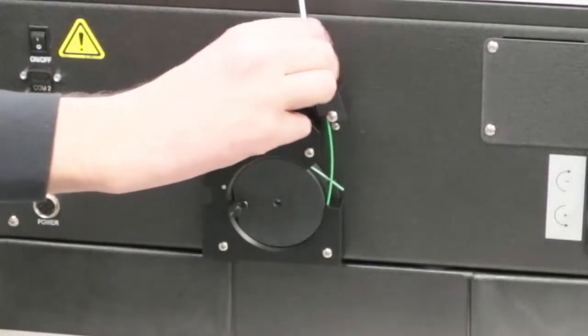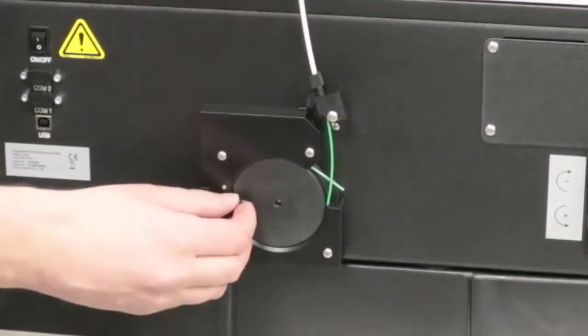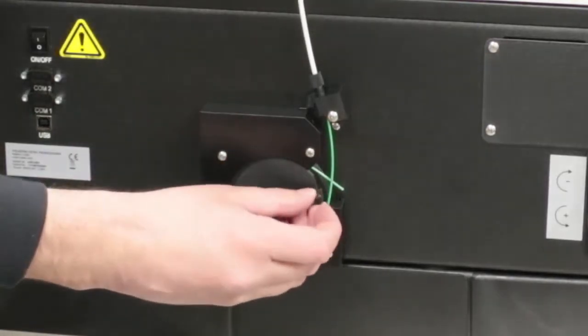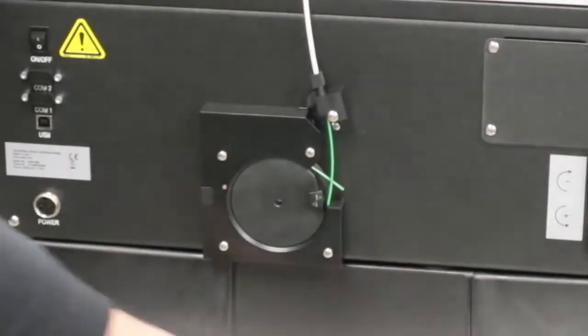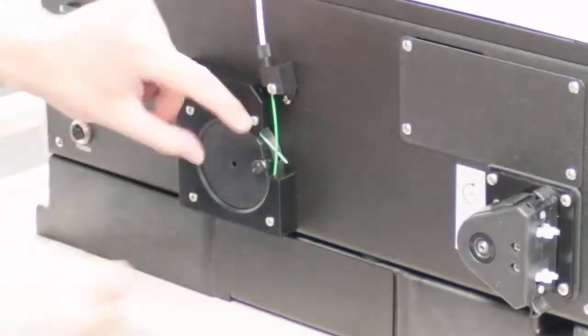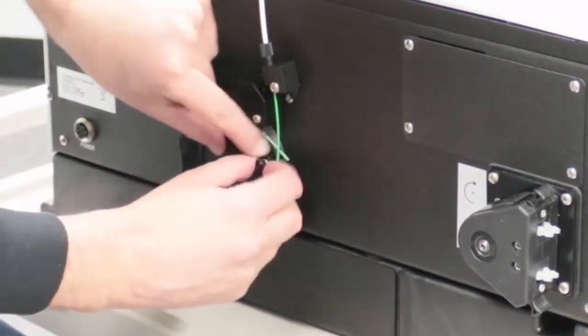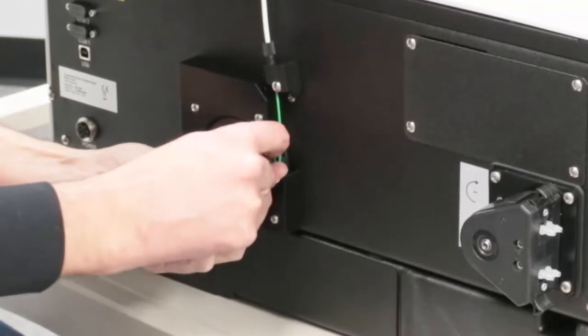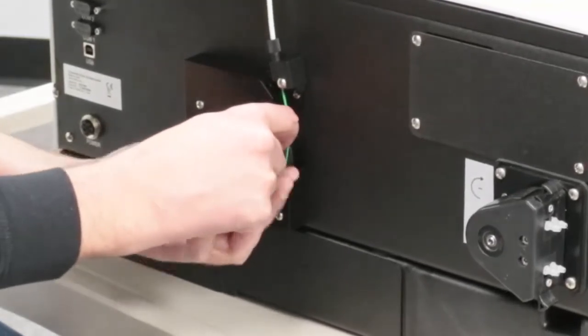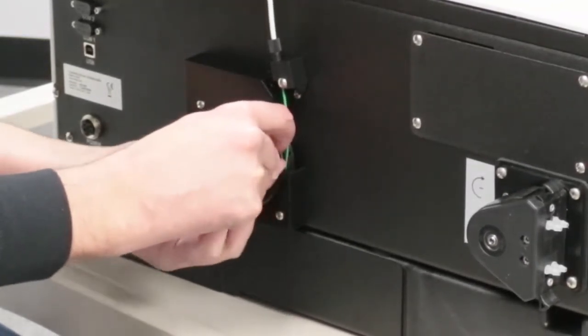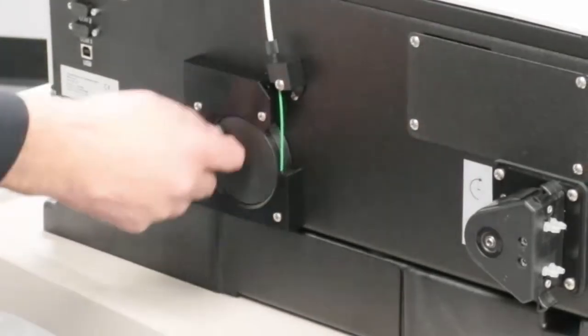Then tighten the nut on the swivel block. Adjust the end of the cable and push it under the clamp on the rotor. Using your fingers, tighten the thumb screw on the clamp.